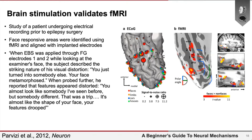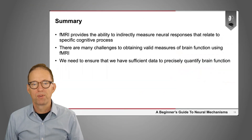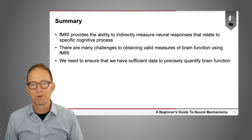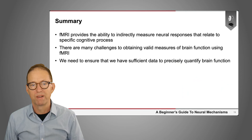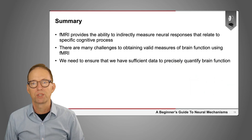In summary, fMRI provides us with the ability to indirectly measure neural responses that relate to specific cognitive processes. There are many challenges in obtaining valid measures of brain function using fMRI, and in particular we need to ensure that we have sufficient data to precisely quantify brain function.